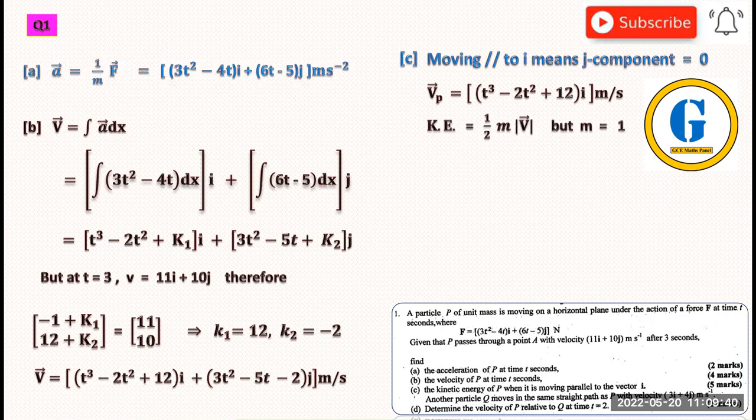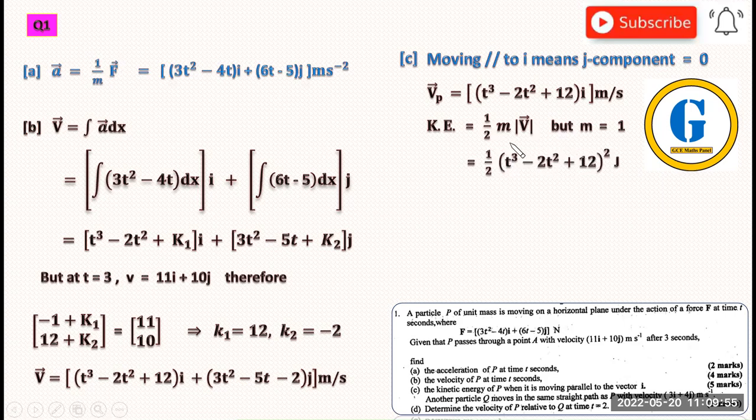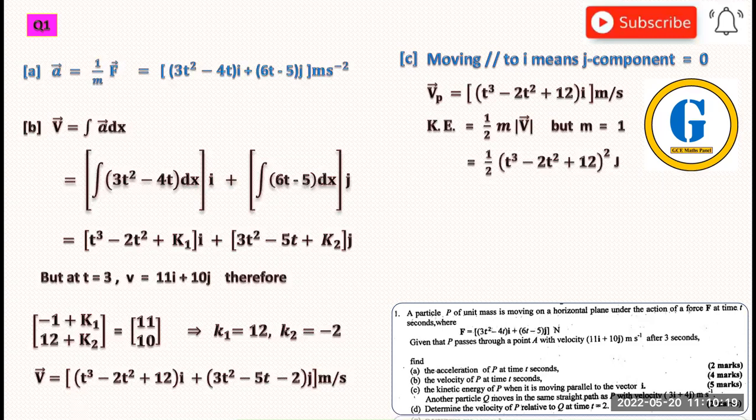Since this particle has unit mass, we have KE = ½ × 1 × v². This gives us ½(t³ - 2t² + 12)² joules. The energy is in joules. If they told us the time, we could substitute for t and get a numerical value.